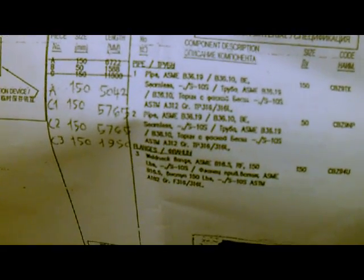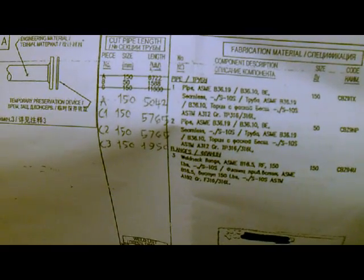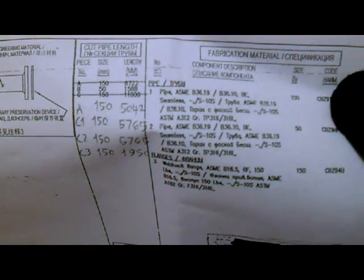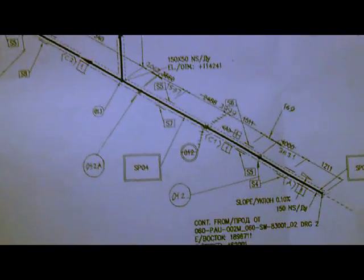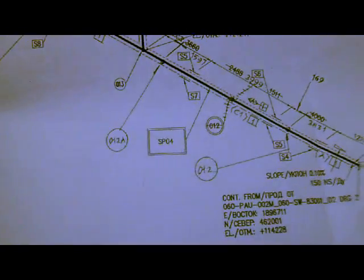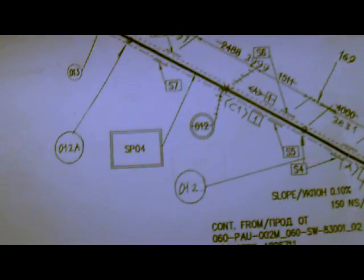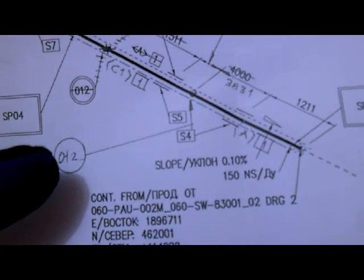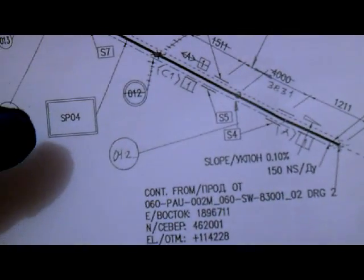The type of pipe here is 316, which is stainless steel. The size is 150, which is six inches. From this we have spool 3 and spool 4. Our joint here is joint 12, which is a shaft weld.